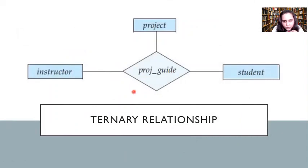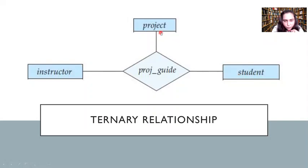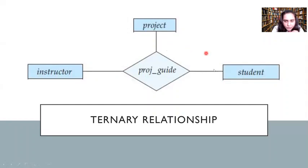Then you have a ternary relationship, which is between three entity sets. As you can see, there are three sets here: instructor, project, and student, with a relationship between them called project_guide. This means instructor one is associated with student one, and student one is working on project one. This relationship is shown inside the rhombus in between. You could also create a quaternary relationship, but we're not going to cover that now.